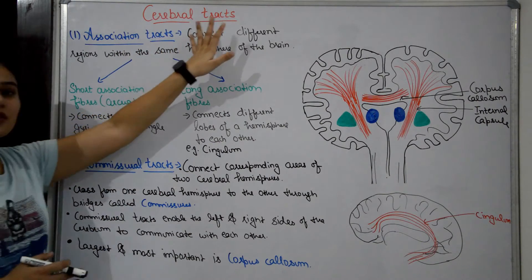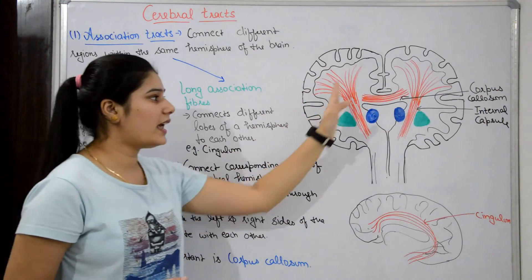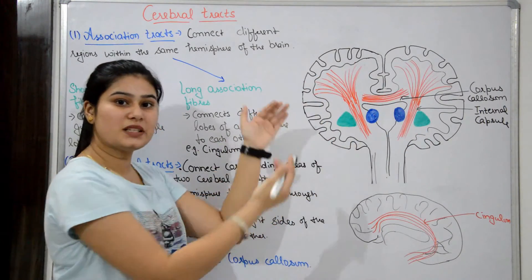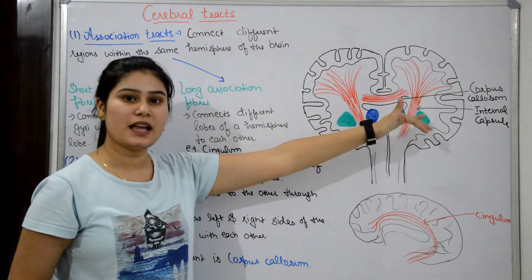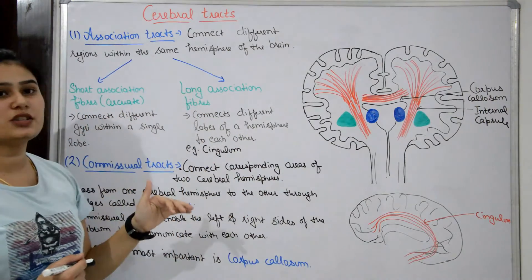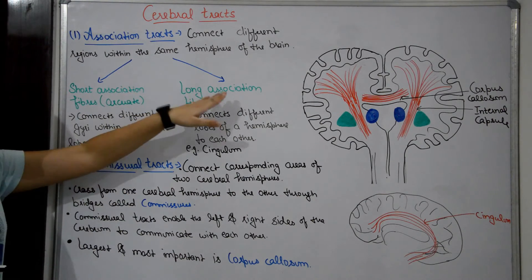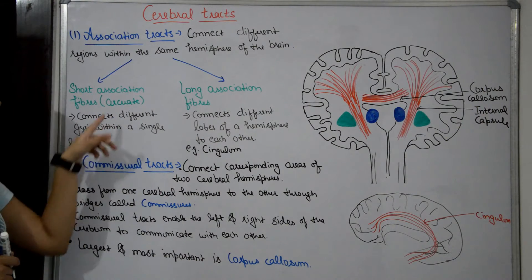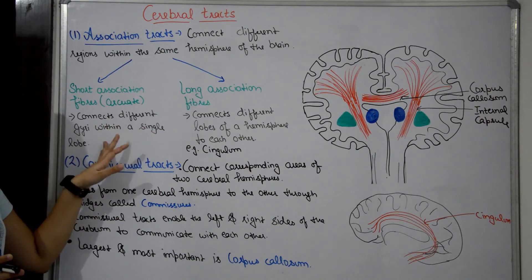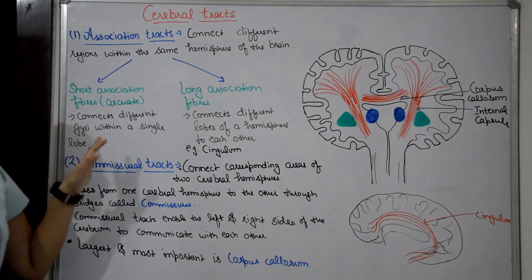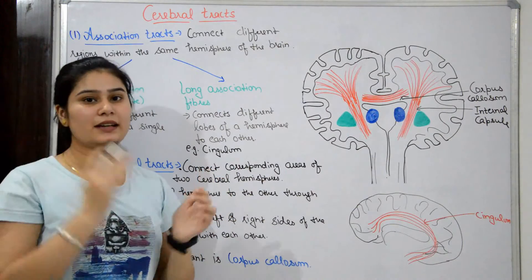First is association tracks, which connect different parts within the same hemisphere. Association tracks or fibers are of two types: short association fibers and long association fibers. Short association fibers are called arcuate fibers. They connect different gyri within a single lobe. Each cerebral hemisphere has four lobes: frontal lobe, parietal lobe, occipital lobe, and temporal lobe.